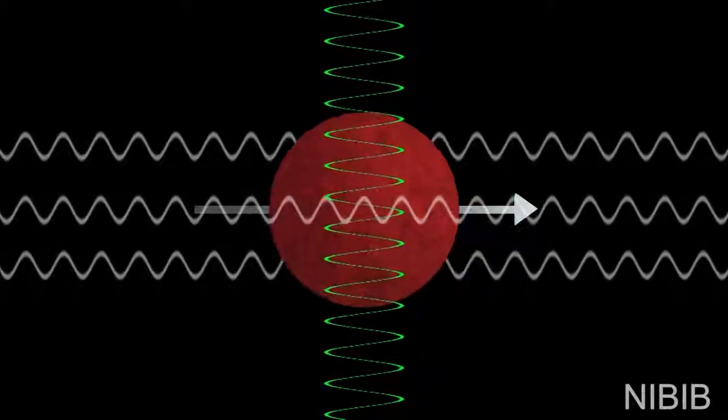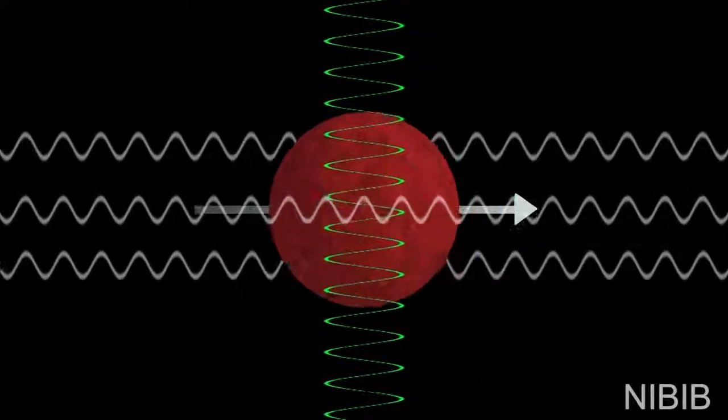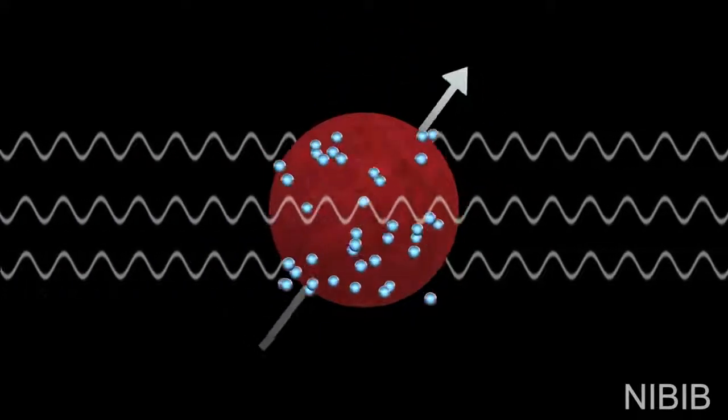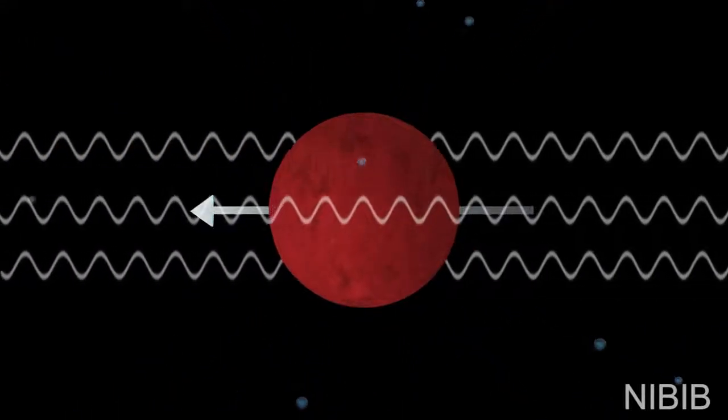Since the radio frequency pulse pushes the proton against its nature, once this pulse is turned off, the protons realign with that magnetic field, releasing electromagnetic energy along the way.